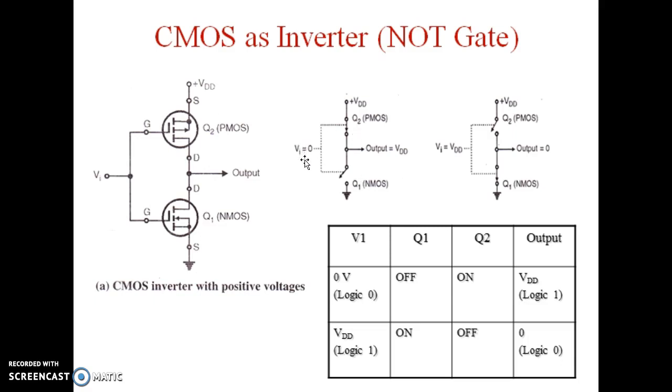So for input equal to 0, PMOS is working as a closed switch and NMOS is working as an open switch. So output is equal to high VDD, which is shown in the table. For input equal to 0, Q1 is off and Q2 is on, and output is VDD, that is logic 1.